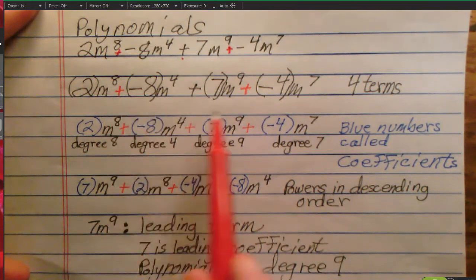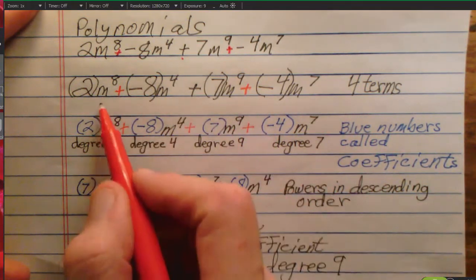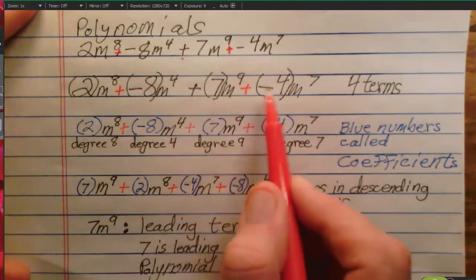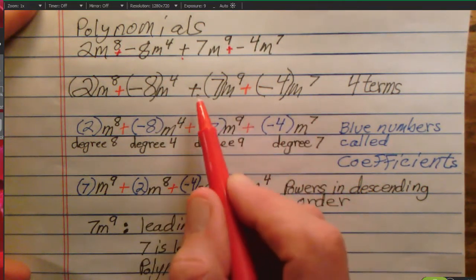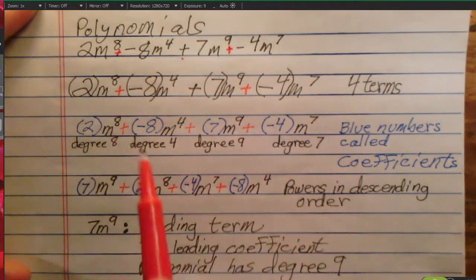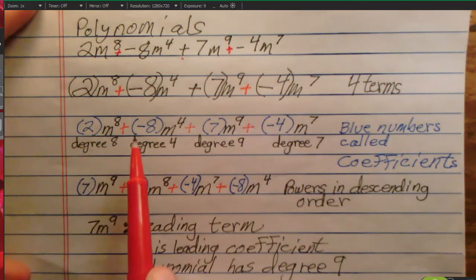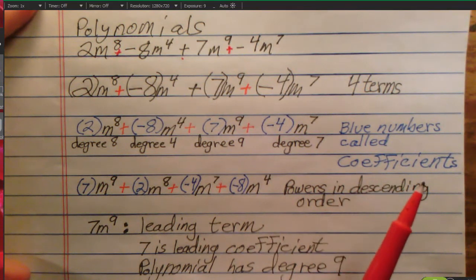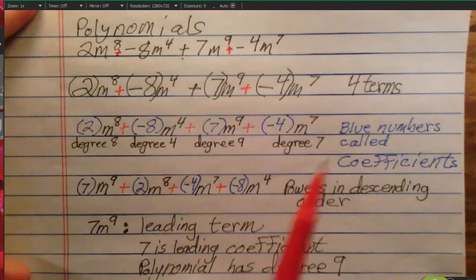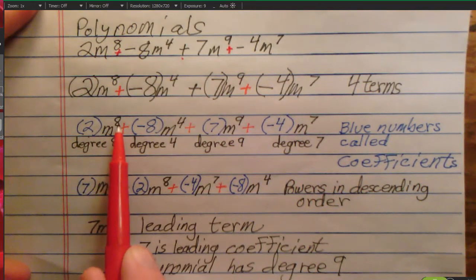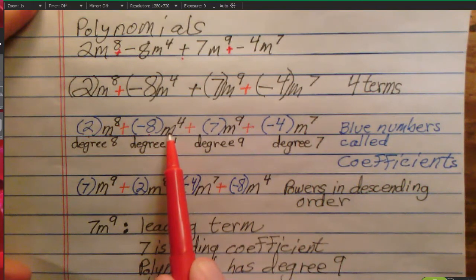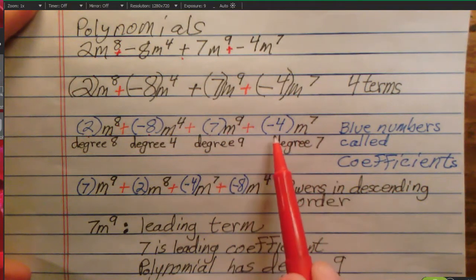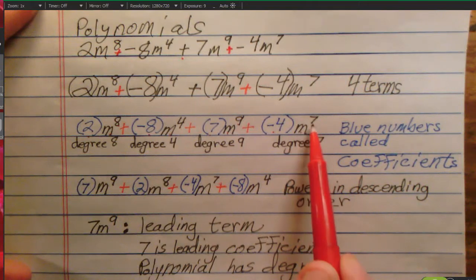Once you insert the invisible plus signs and put parentheses around the numbers, we're going to talk about the numbers in a minute. You can see clearly that you have four terms. And now I've colored the numbers blue because they're very special. They have a name. They are coefficients. 2 is the coefficient of m to the eighth. Negative 8 is the coefficient of m to the fourth. 7 is the coefficient of m to the ninth. And negative 4 is the coefficient of m to the seventh.